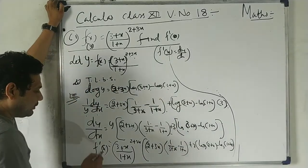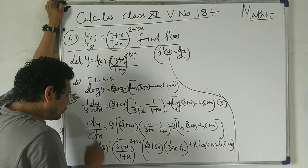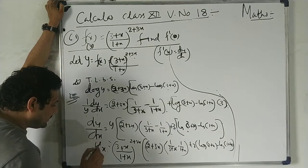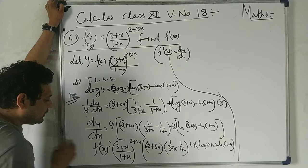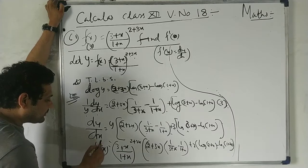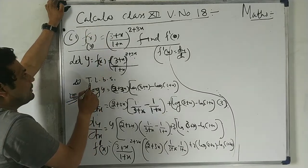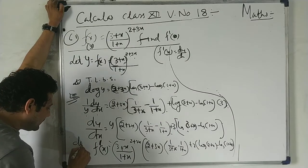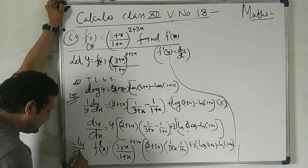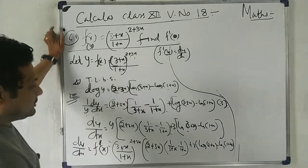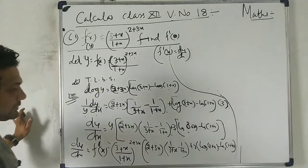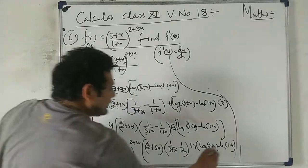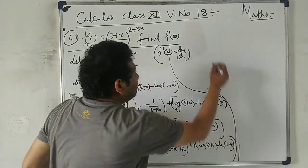After differentiating, dy/dx is called f'(x). If y was a function, then dy/dx is f'(x). So dy/dx ko hi f'(x) bolte hain. Now we need to put x = 0 to find f'(0).